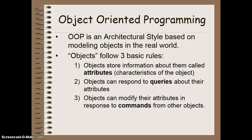These objects that we create follow three basic rules. The first is that objects store information about themselves called attributes. These are the characteristics of an object. So for example, if I was going to make a student object, I might have attributes like IQ, student number, gender, age, etc.